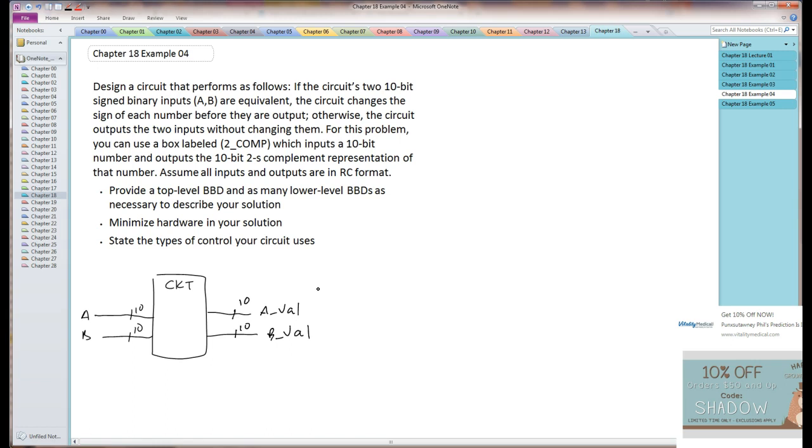Additionally, it has two outputs. Each of those outputs, for example this output, is either going to output A or the two's complement of A, or B and the two's complement of B. So it seems pretty obvious there are two muxes on the output, so we can draw those two muxes.